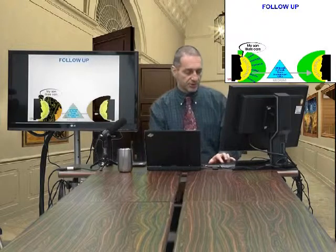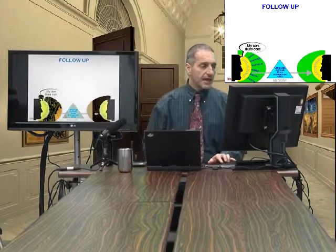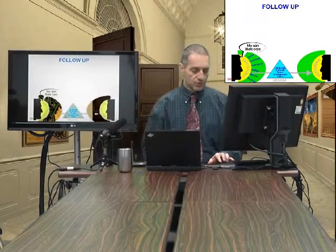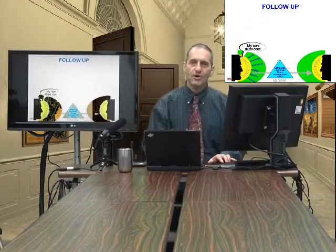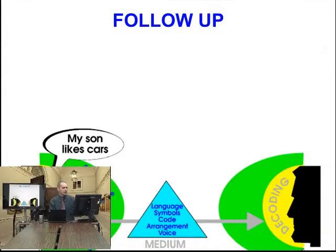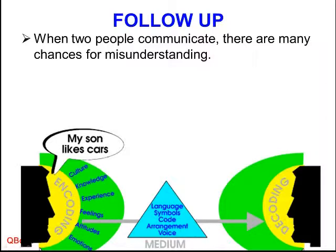Now let's talk about communication a little more — the communication model. How does communication work? Questions are a form of communication, so if we understand the communication model better, we can identify what to be careful of, what to avoid, and what to look at carefully. When two people communicate, there are many chances for miscommunication. How does miscommunication happen? From the person speaking to the person listening, you go through a few layers.